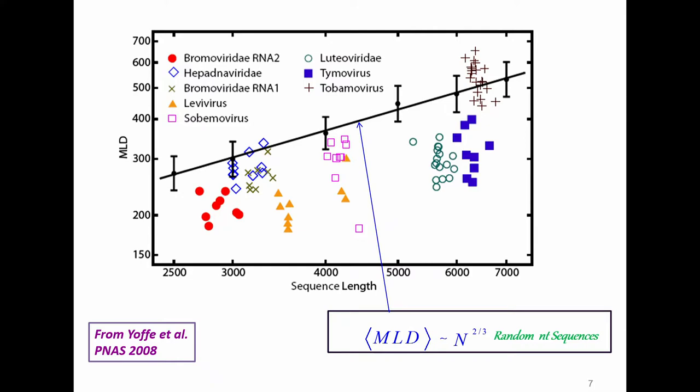This is from the thesis of Aaron and paper we published together. These are different viruses, their MLD as a function of sequence length. What you have here is you take the sequence, you randomly shuffle it, and you get a very nice straight line with a slope of 2/3. The MLD scales like n to the 2/3, n being the number of nucleotides. These guys here sit on the random sequence line, but they are not icosahedral. That's why they are here.